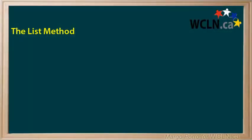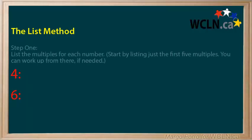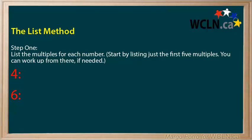Let's use the list method to find the lowest common multiple of 4 and 6. The first step is to list the multiples for each number. Start by listing just the first five multiples. You can work out from there if needed.